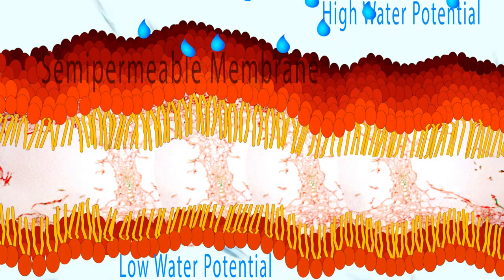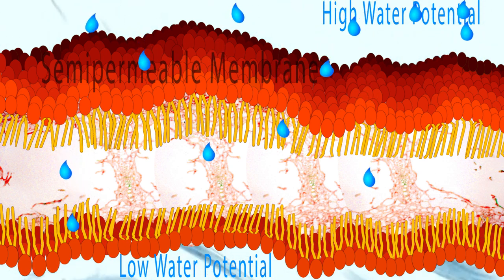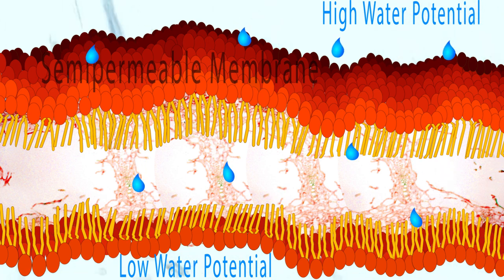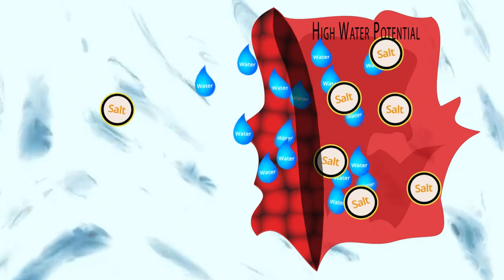During this process, water moves from a solution of high water potential to one with low water potential. Cells with the lower potential draw water in through the semi-permeable membrane. Cells with the high potential release water through the same membrane.